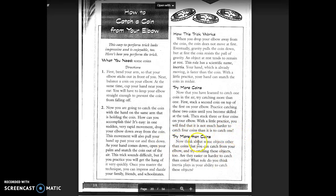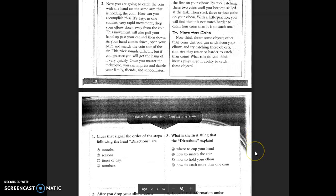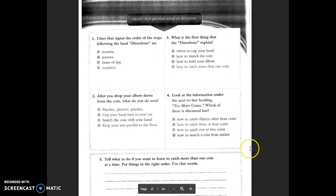Try more than coins. Now think about some objects other than coins that you can catch from your elbow and try catching these objects too. There, are they easier or harder to catch than coins? What role do you think inertia plays in your ability to catch these objects? Man, if you guys try that at home, you'll have to let me know how it goes.